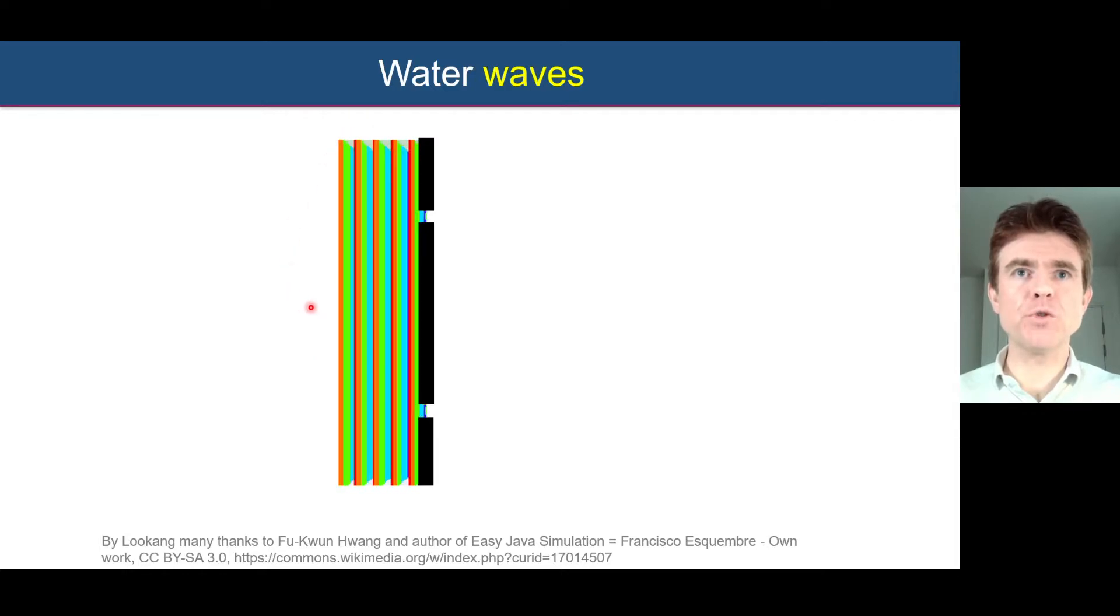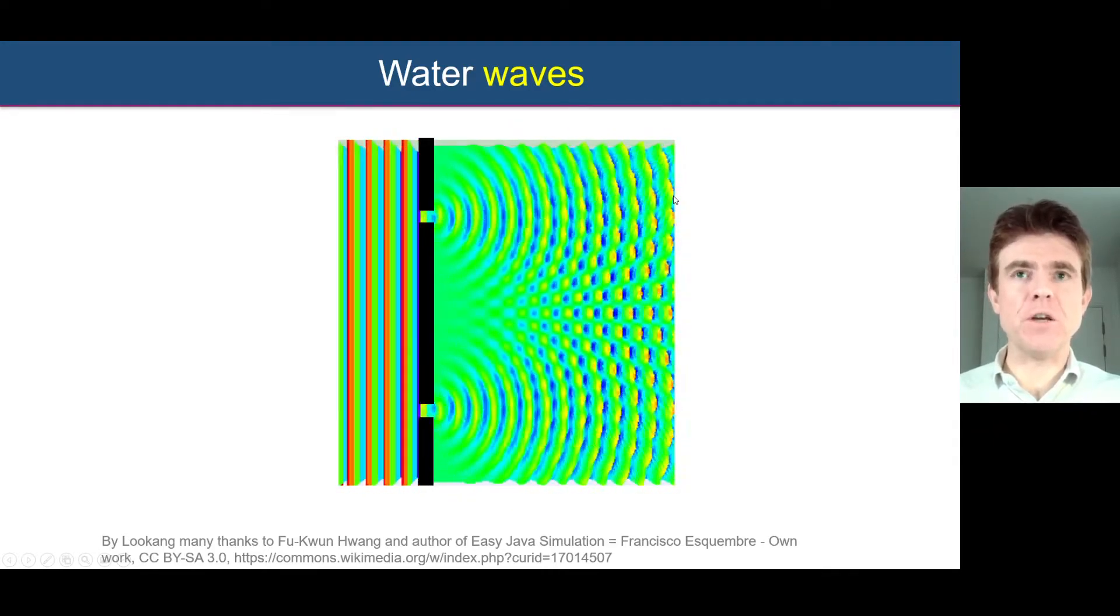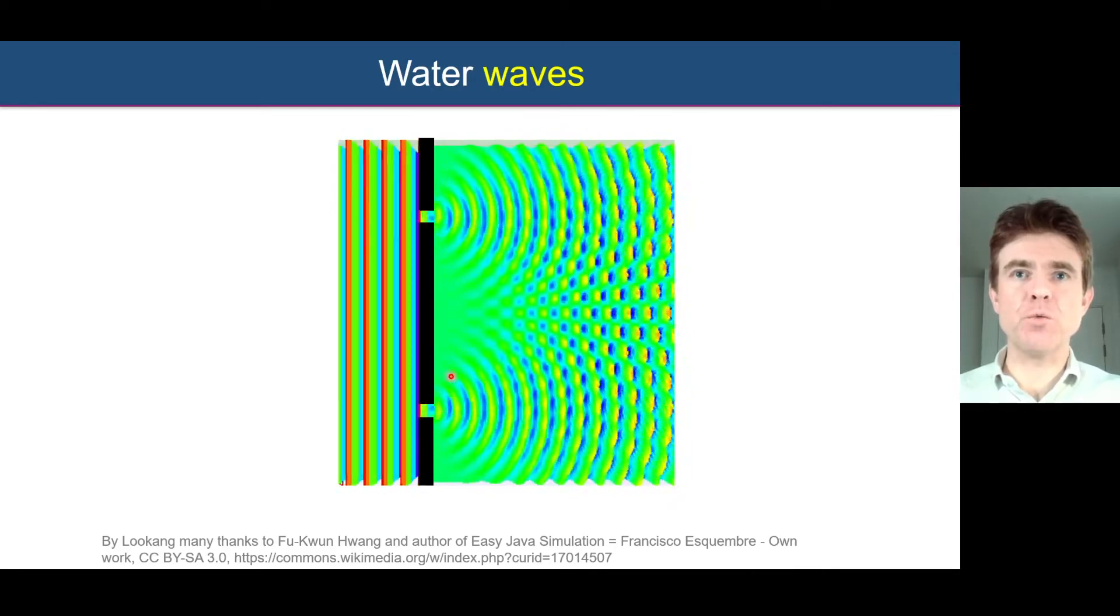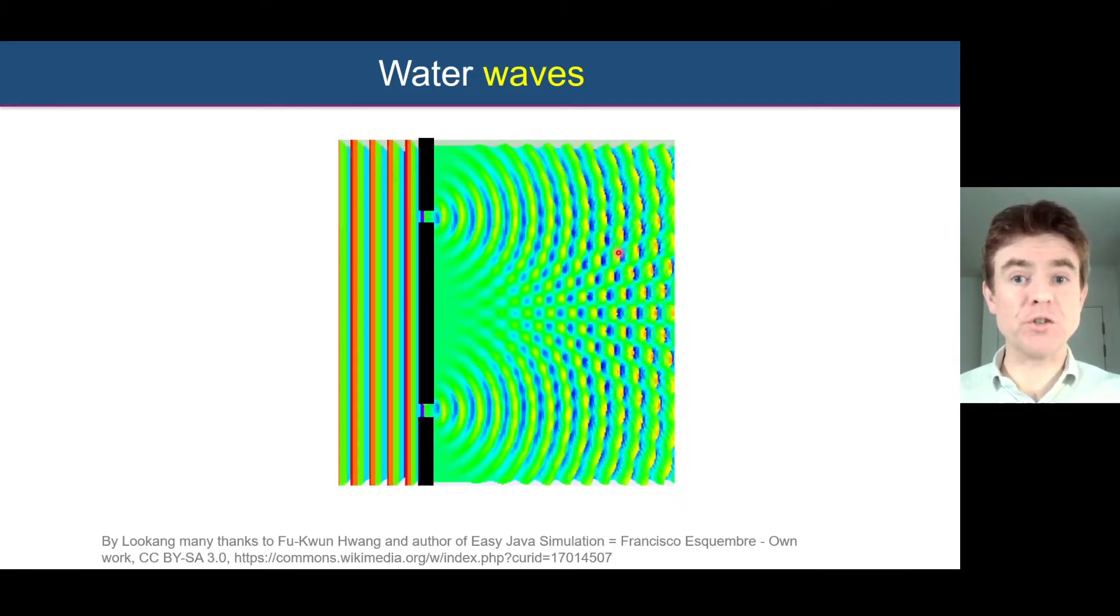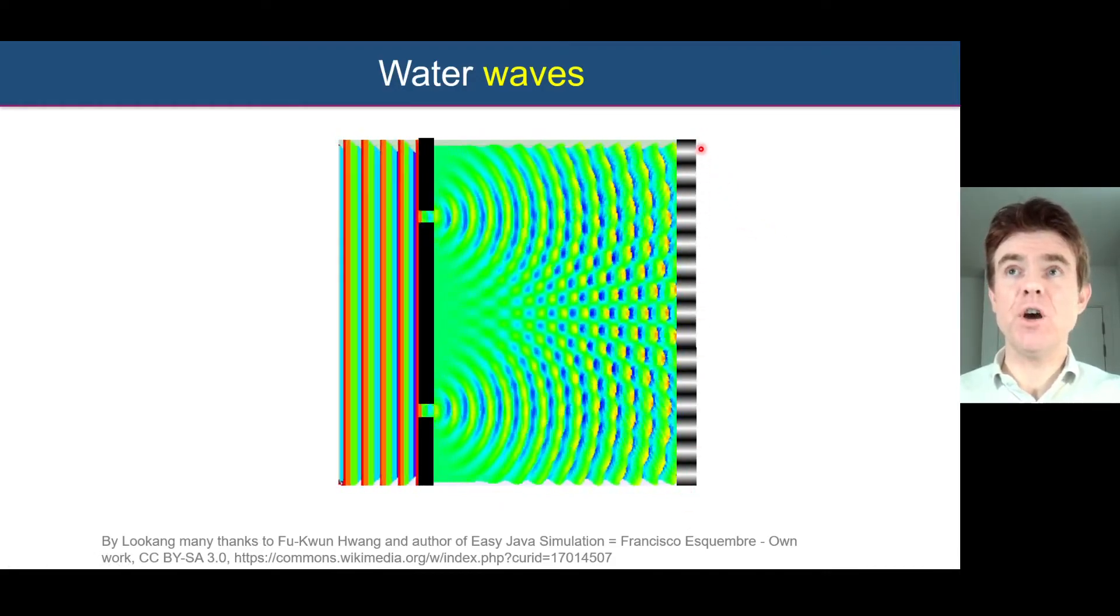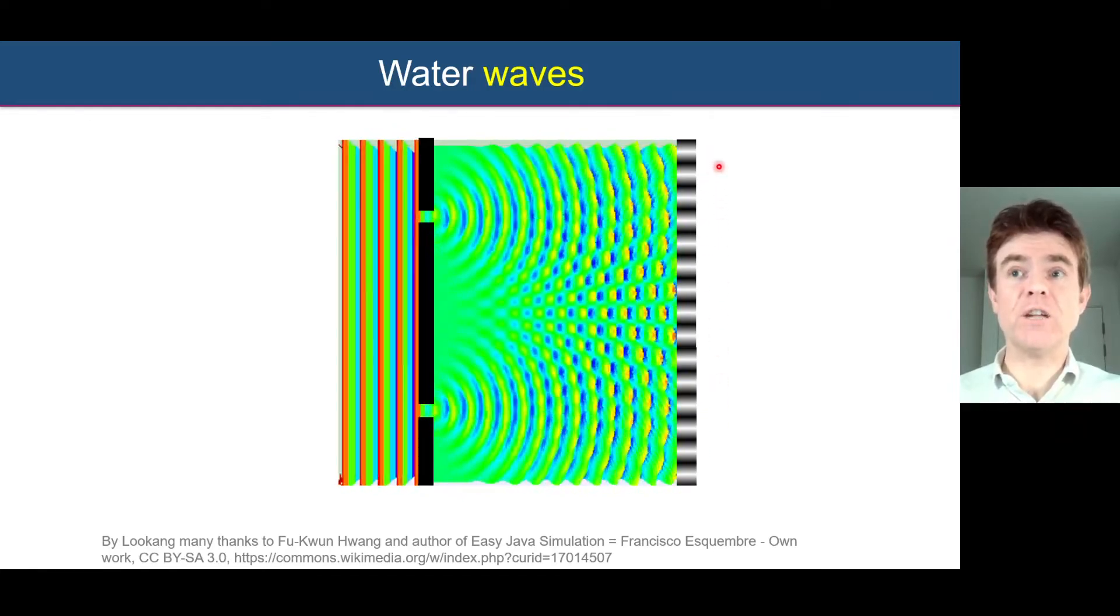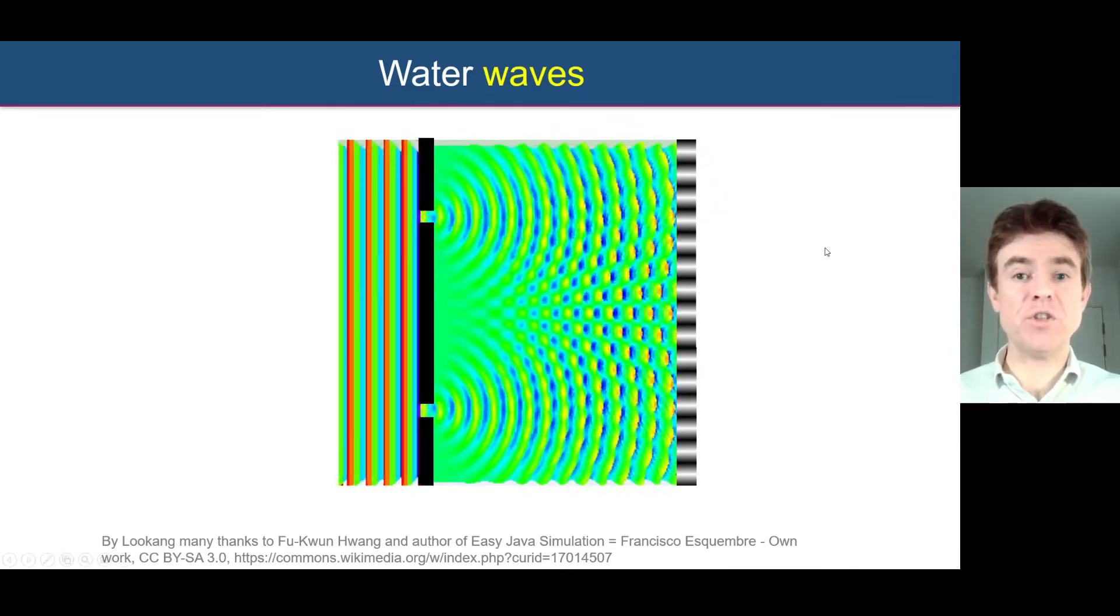Here we have planar water waves approaching a wall with two slits. What is it that we expect to see? The waves interfere. We have two sources of waves emanating from those two slits, those two gaps in the wall, and therefore we get constructive and destructive interference. If we were to look at the overall intensity of waves detected at a wall on the right-hand side, we'd end up with this varying pattern of increasing and decreasing intensity as a result of the interference between the two waves.